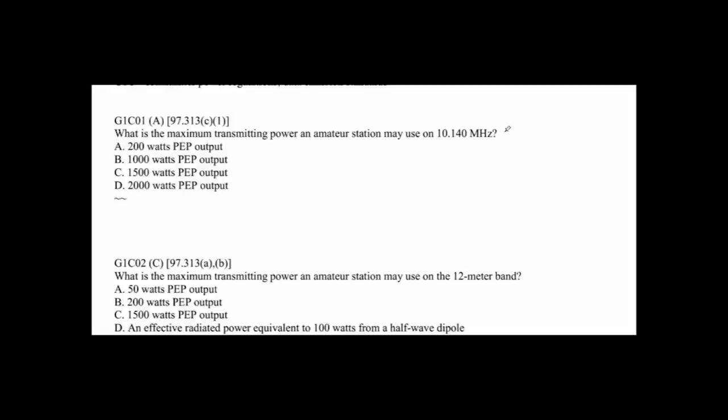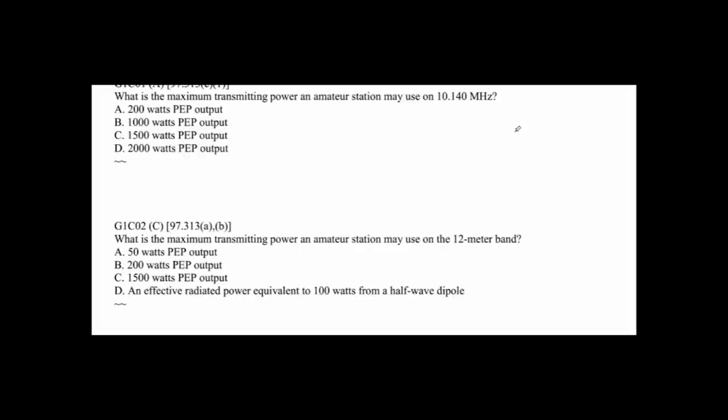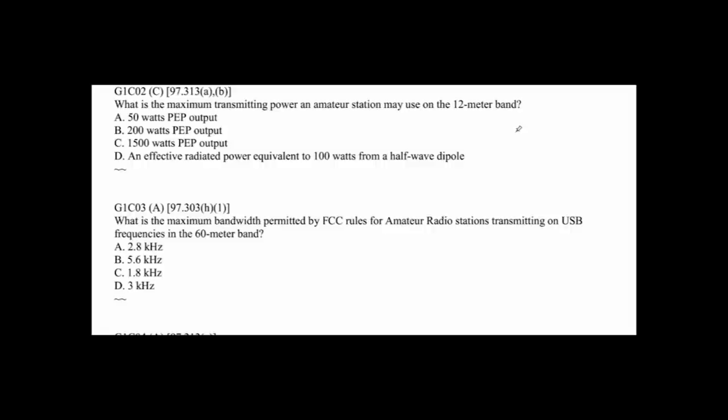G1C01: What is the maximum transmitting power an amateur station may use on 10.140 MHz? The answer is A, 200 watts PEP — that's adjacent to the frequency standard, so we can certainly understand the limitation imposed at that frequency. G1C02: What is the maximum transmitting power an amateur station may use on the 12 meter band? The answer is full 1500 watts peak envelope power, PEP. G1C03: What is the maximum bandwidth permitted by the FCC rules for an amateur station transmitting on USB in the 60 meter band? The answer is 2.8 kHz. In 2.8 kHz you can transmit really good audio, so there's no reason to be wider than that, frankly, anywhere.